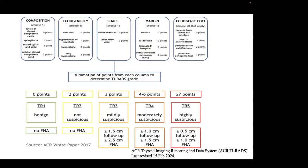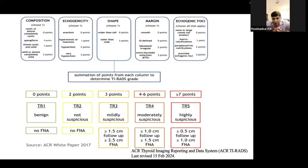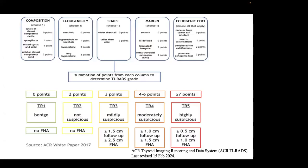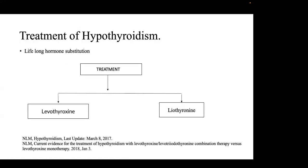Regarding TIRADS scoring: a score of 0 is benign; 2 points is not suspicious; 3 points is mildly suspicious — if nodule is more than 1.5 cm, follow-up is recommended, and if more than 2.5 cm, FNA is considered. For scores of 4–6 points (moderately suspicious), if more than 1 cm follow-up is advised, and if more than 1.5 cm FNA is performed. A score of 7 or more is highly suspicious — follow-up if more than 0.5 cm, FNA if more than 1 cm.